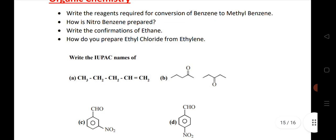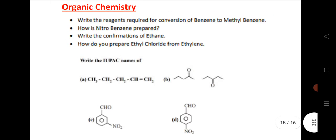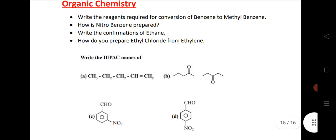Next, last chapter. Organic chemistry. I have just given 5 VSAQs from this chapter. These are very important. IUPAC naming. You know nomenclature, how to name the compounds. By using the rules of IUPAC you can solve. First is reagent required to convert benzene to methyl benzene, nitrobenzene. Prepare conformation of ethane. How do you prepare ethyl chloride from ethylene?